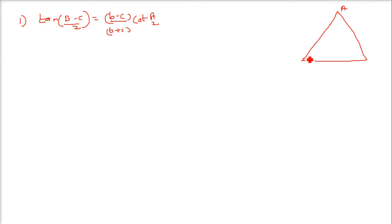So this is angle b, angle c, angle a, and the side will be c and b and a. So in this triangle this will hold and this is called the Napier's analogy or law of tangents.